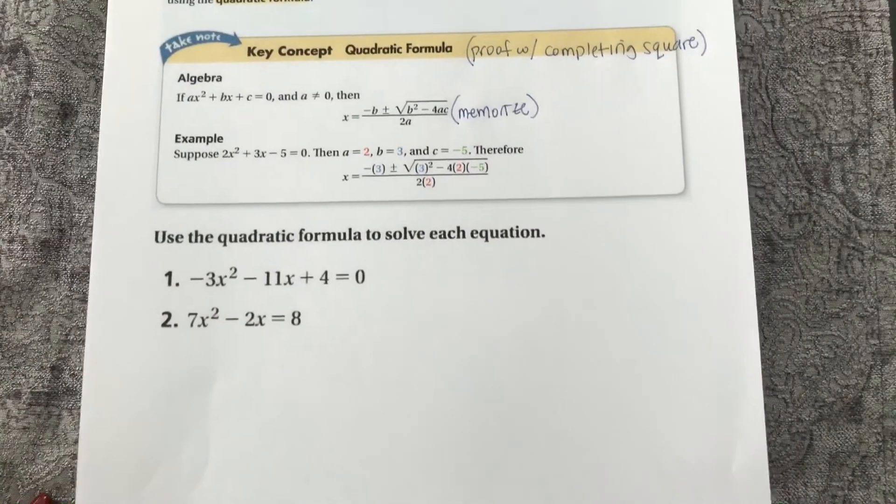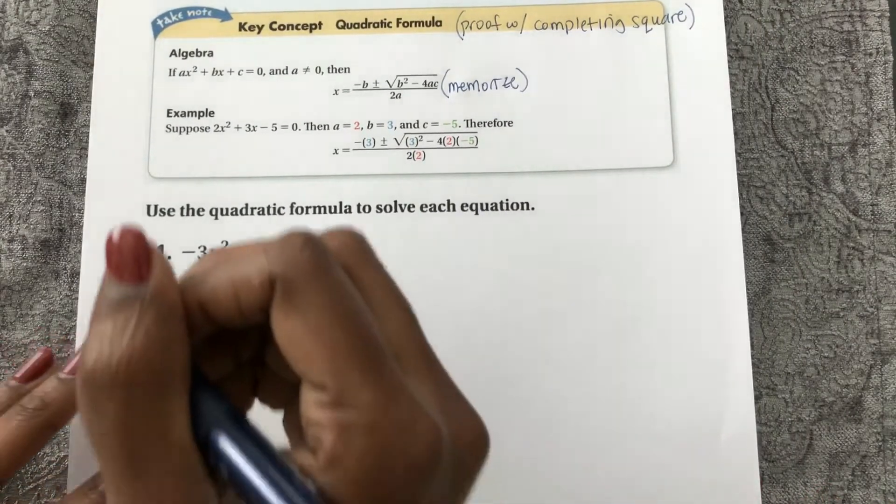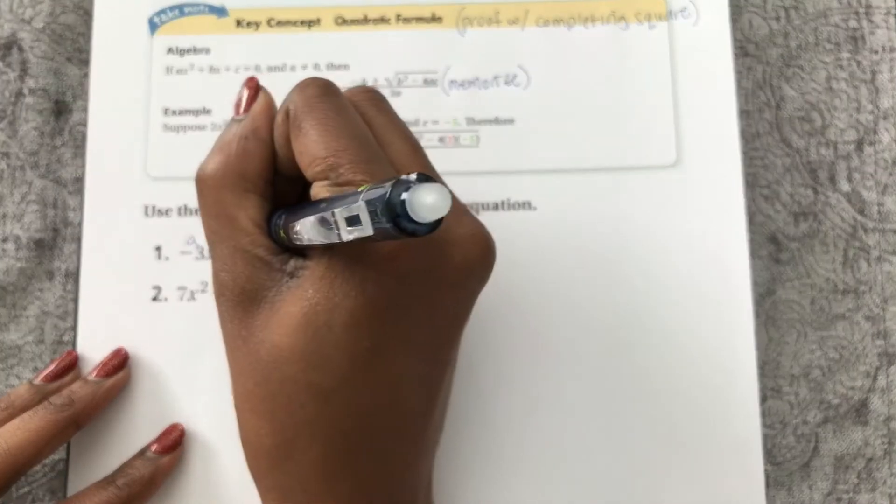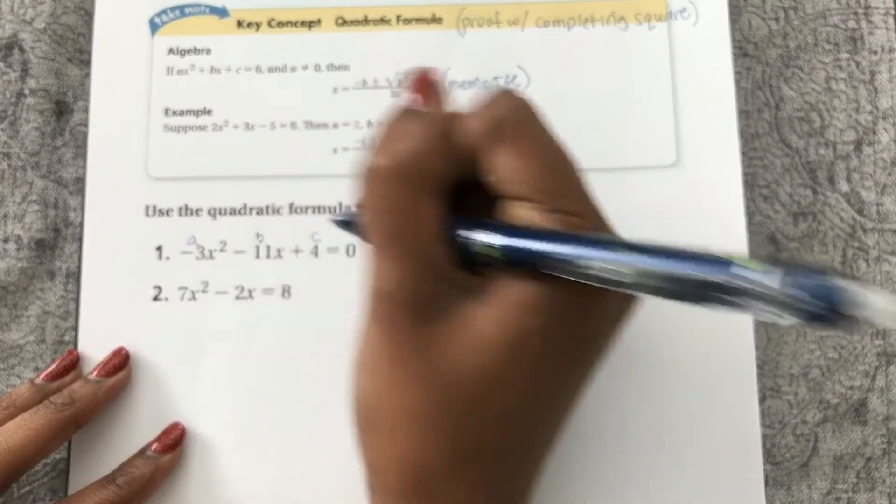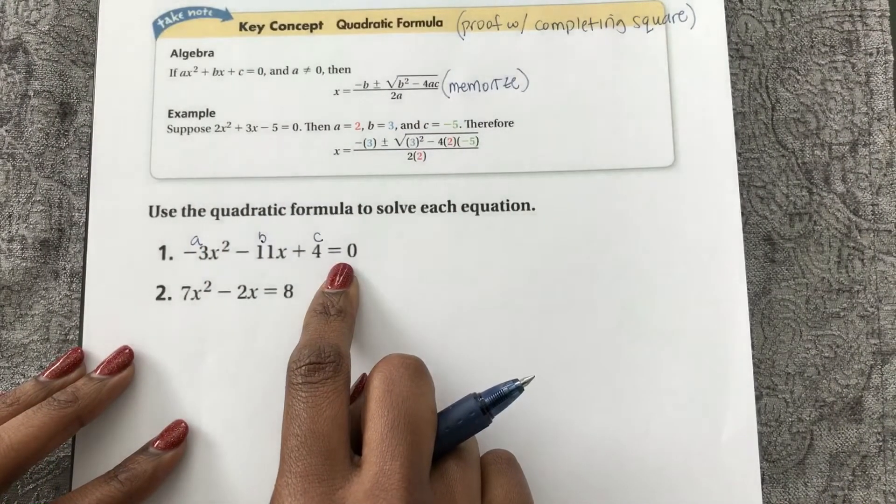Let's look at example one below. Here we see a is negative 3, b is negative 11, c is 4 because it's already equal to zero.